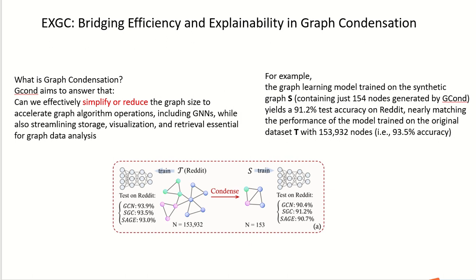Can we effectively simplify or reduce graph size to accelerate the training process of graph networks? For example, here is an instance.